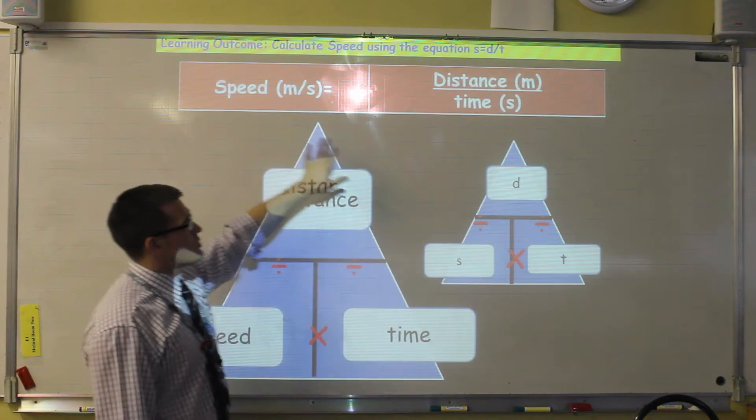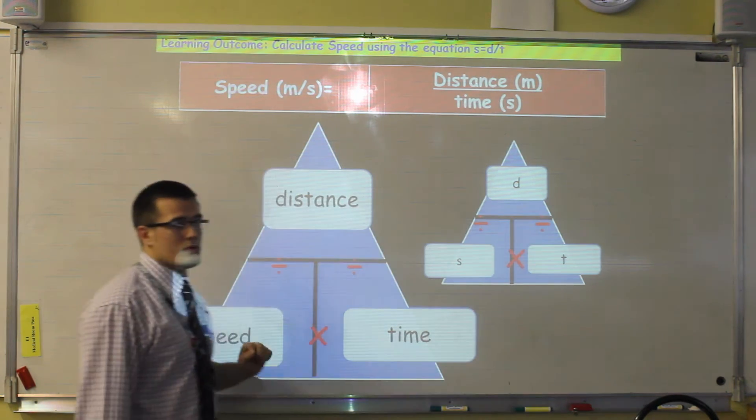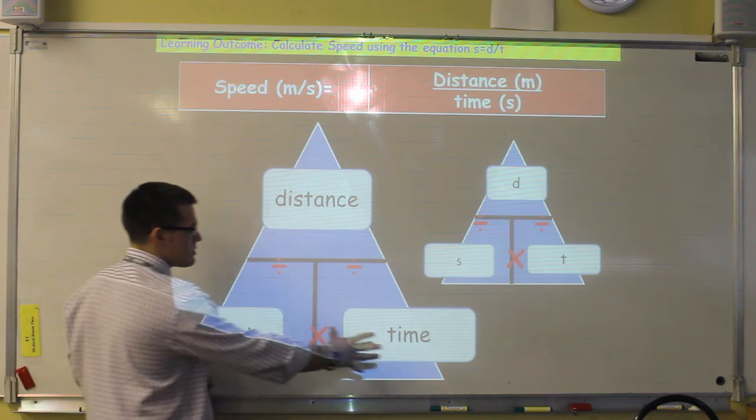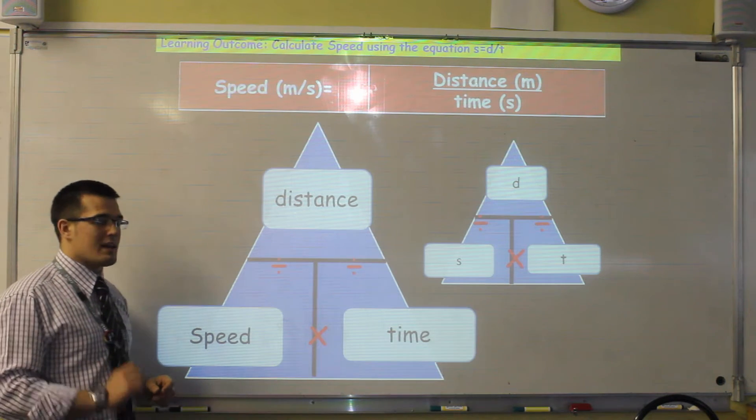If we've got an equation that was multiplied, for example Newton's second law, force is mass times acceleration, then the multiplication always goes across the bottom. We'll get to that later.